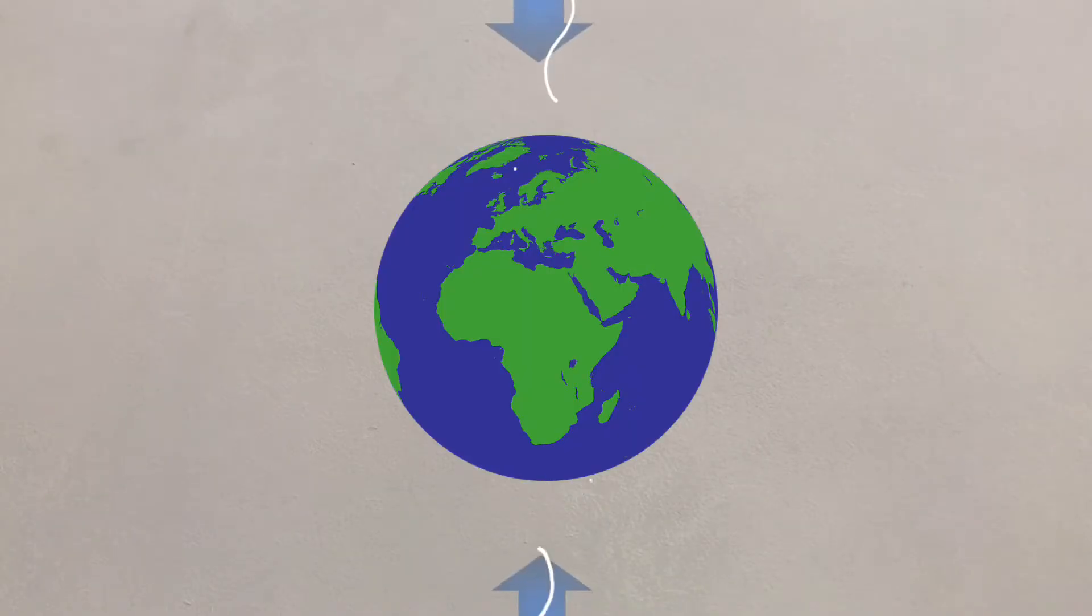Where air is sinking, at places like the North or South Pole, pressure is high and ground winds move away from the area.